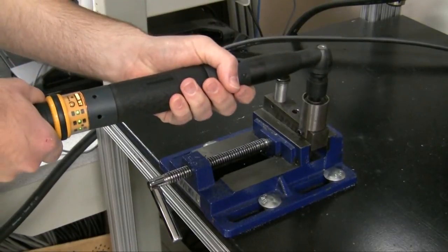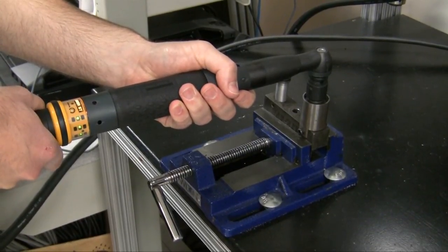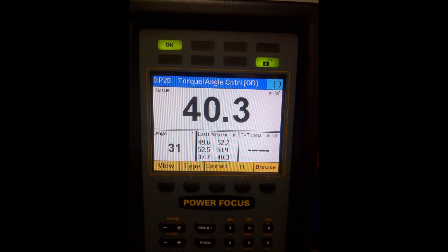Now, when running the soft joint, the tool shuts off based on angle, with the torque at shut off below our target, but still within the minimum and maximum limits of the strategy.